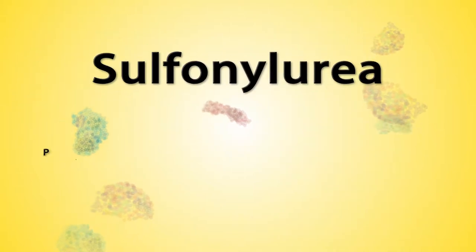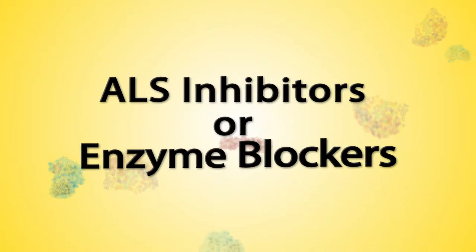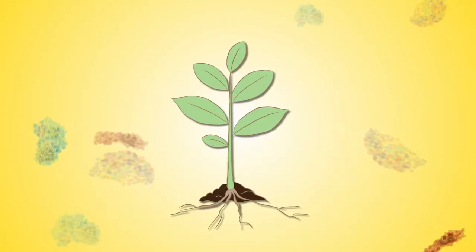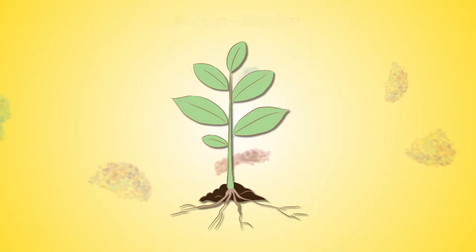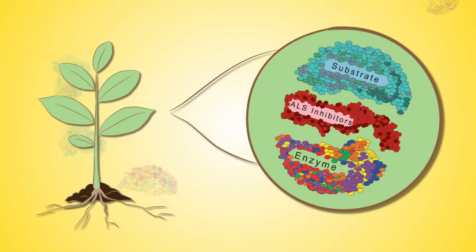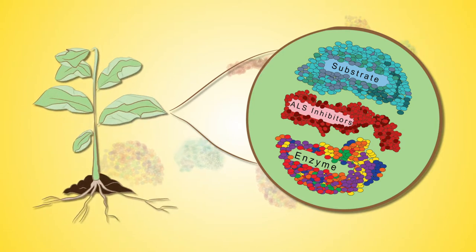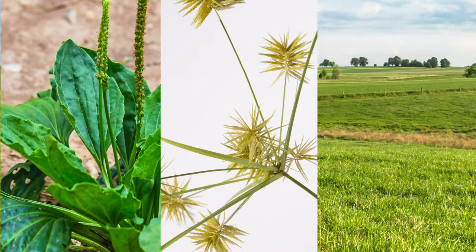Sulfonylurea, phenylpyrilazine, and imidazolinone are examples of ALS inhibitors or enzyme blockers. They are chemicals that block the normal function of an enzyme called acetylactate synthase, or ALS. This enzyme is essential in amino acid or protein synthesis. Without proteins, plants starve to death. Enzyme blockers kill a wide range of plants, including broadleaf weeds, nutsedges, and grasses.